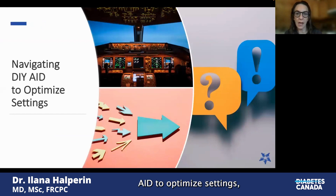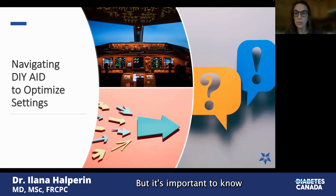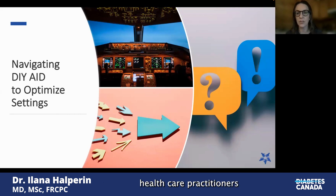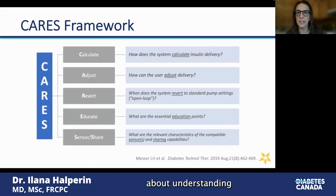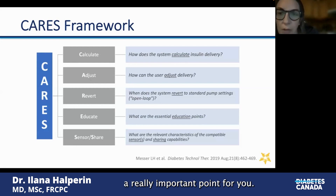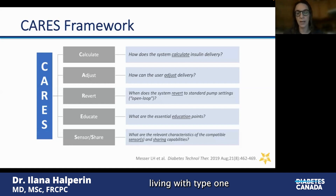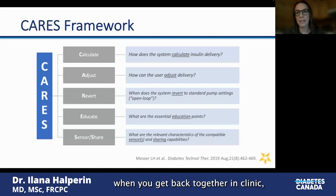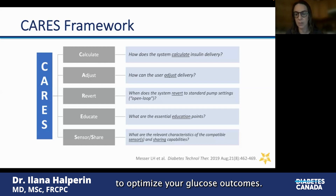When it comes to navigating DIY AID to optimize settings, there are lots of growing resources — including a full hour-and-20-minute webinar I put together for healthcare practitioners. We cover understanding how the system calculates insulin, how the system adjusts insulin, what to do when the system stops working, essential management points, and how to share the data. That last point is really important: your healthcare team does want to have a look at the data, so figure out what system works for them. That way, when you get back together in clinic, they can review how the insulin delivery system is working for you and help you make changes to optimize your glucose outcomes.